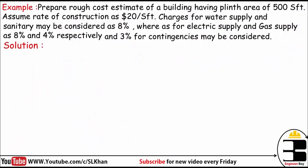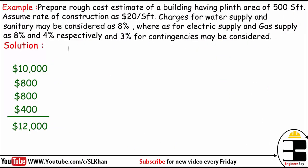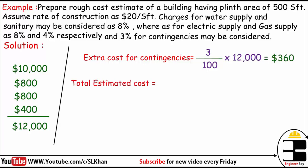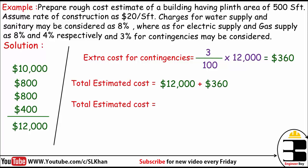The total cost at this point is $12,000. Now we take 3% for contingencies — dividing by 100 to remove the percent sign, if it is 3 in 100, then how much should it be in $12,000? We get $360 as the extra cost for contingencies. Finally, the total estimated cost is $12,000 plus $360, which equals $12,360.